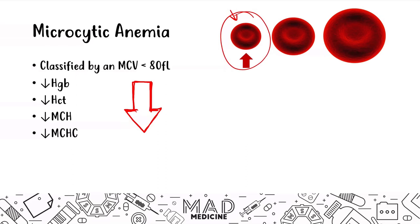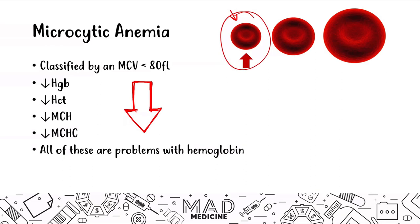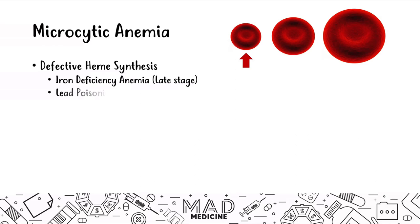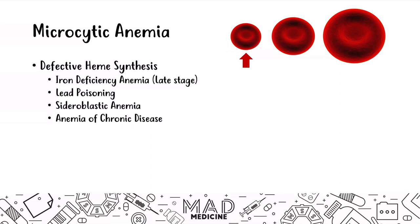All of the problems in microcytic anemia are going to be problems due to hemoglobin synthesis. This can mean a defect at any step in the process of synthesizing hemoglobin. A defect in heme synthesis can include late-stage iron deficiency anemia — which makes sense because iron binds to protoporphyrin to become heme — as well as lead poisoning, sideroblastic anemia, and anemia of chronic disease. All four of these will cause a defect in heme synthesis and thus lead to microcytic anemia.